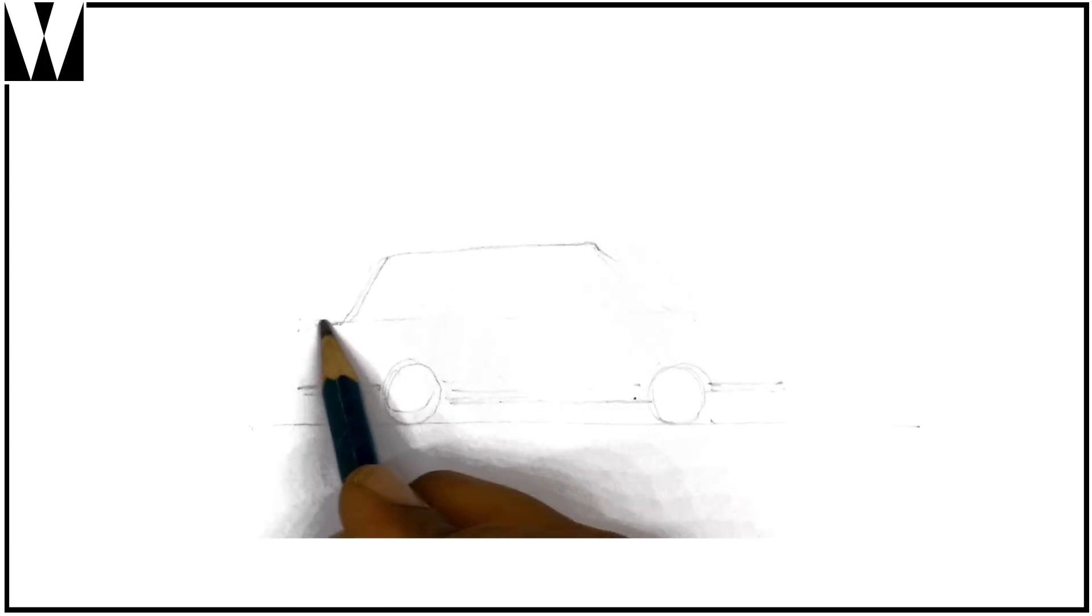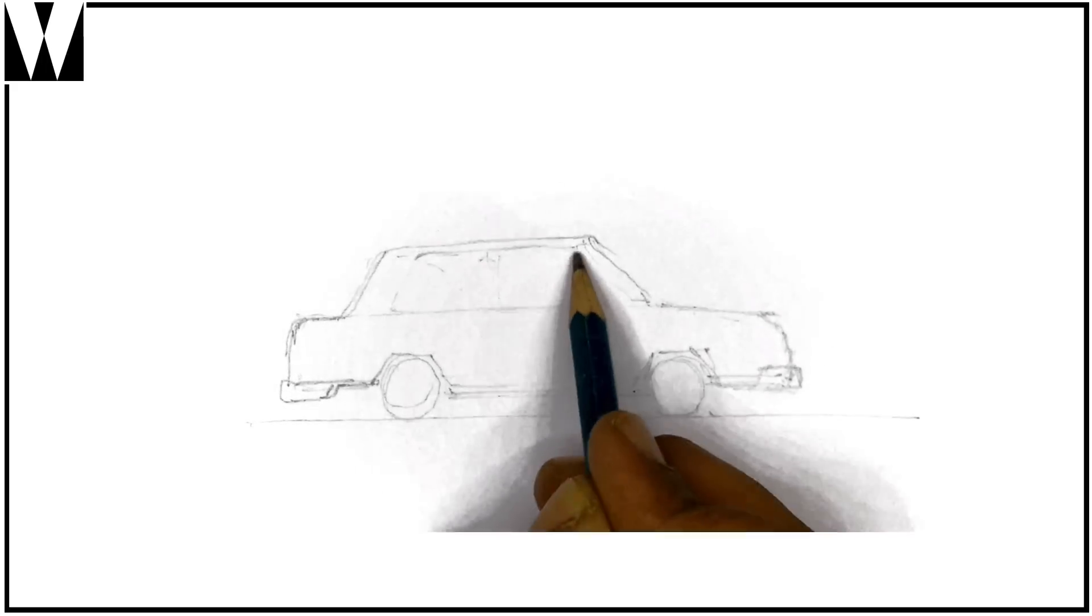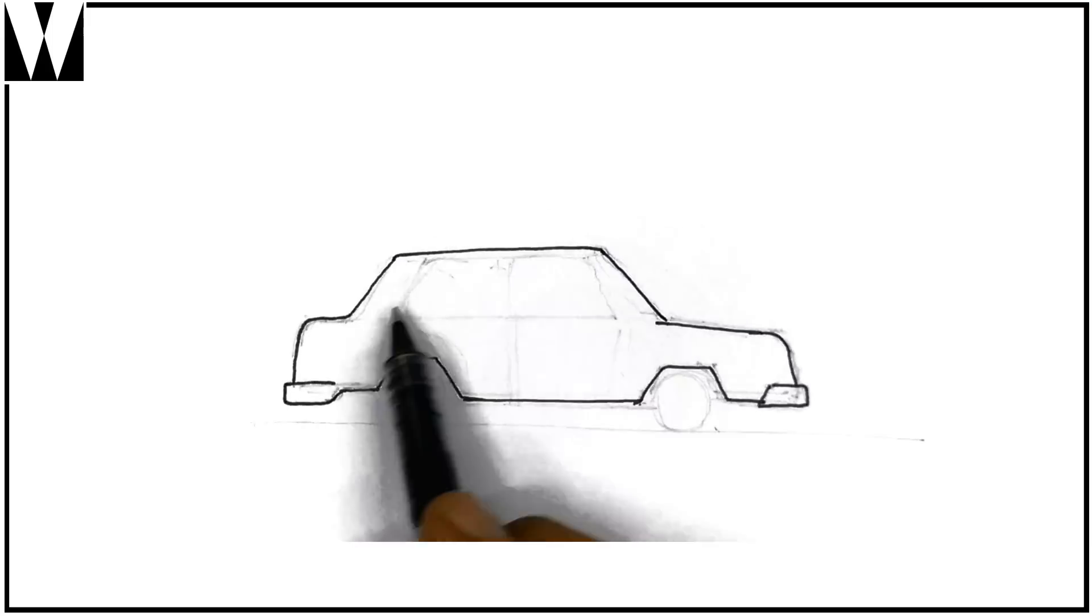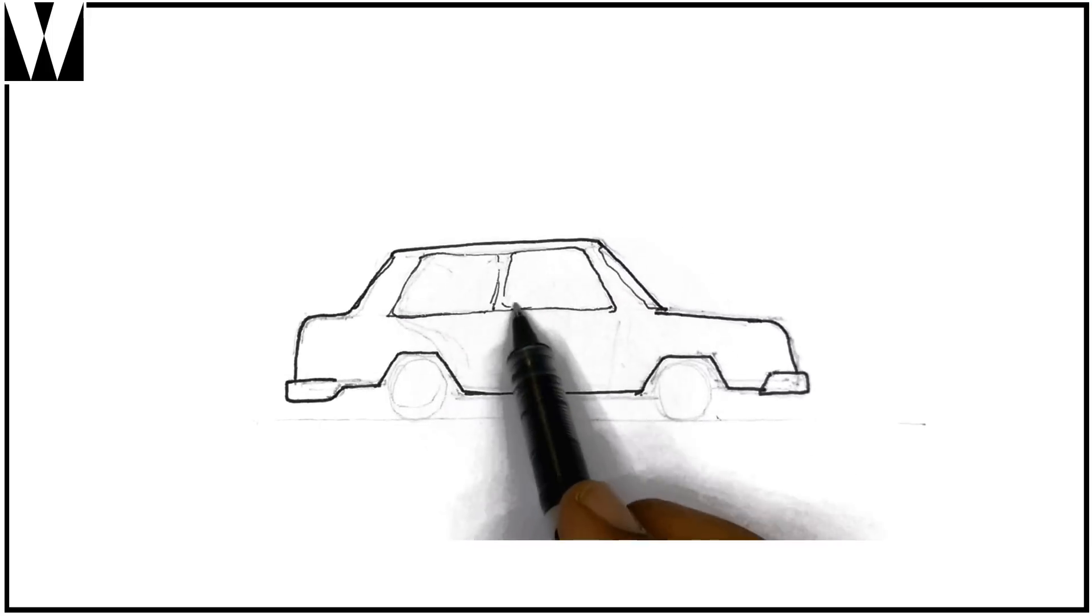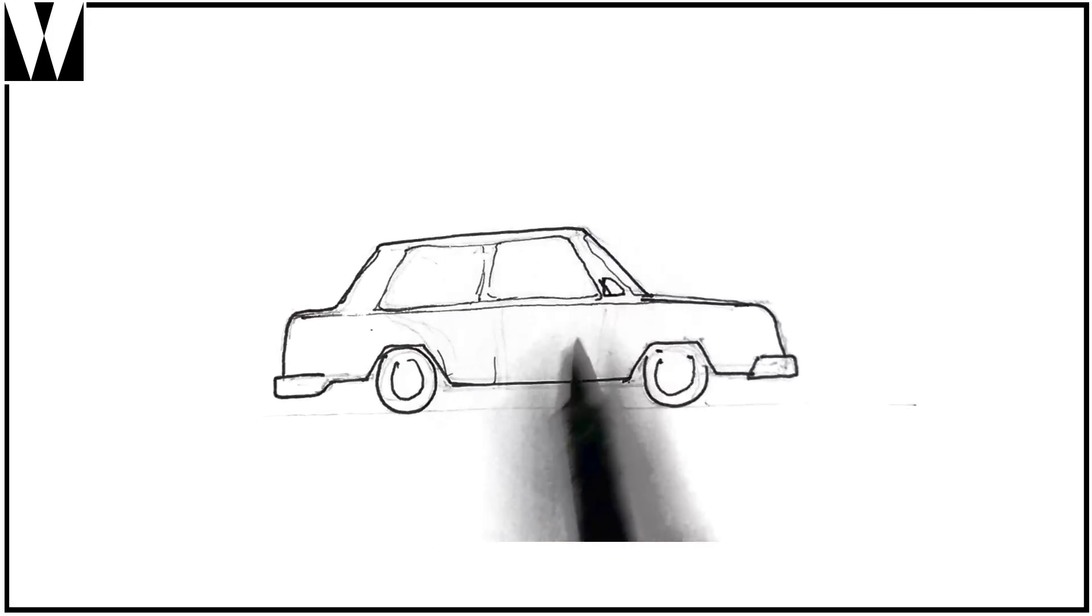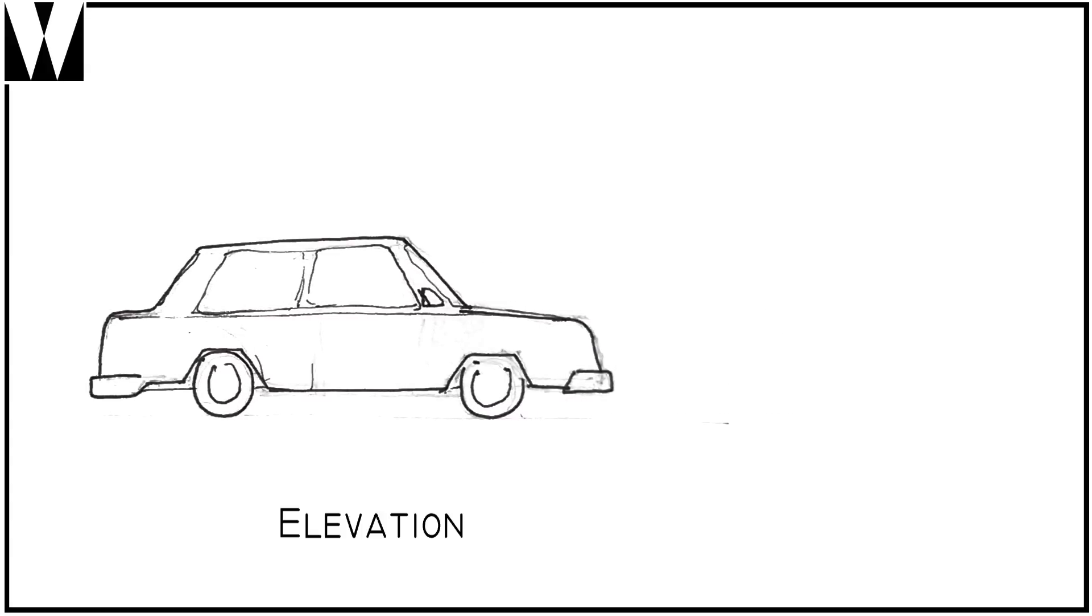Let's draw a car, our cartoon version of the car. Starting with the wheels, we describe the basic shape of the car and a little detail of the doors, the windows, the windscreen. What we have drawn here is what we call an elevation.